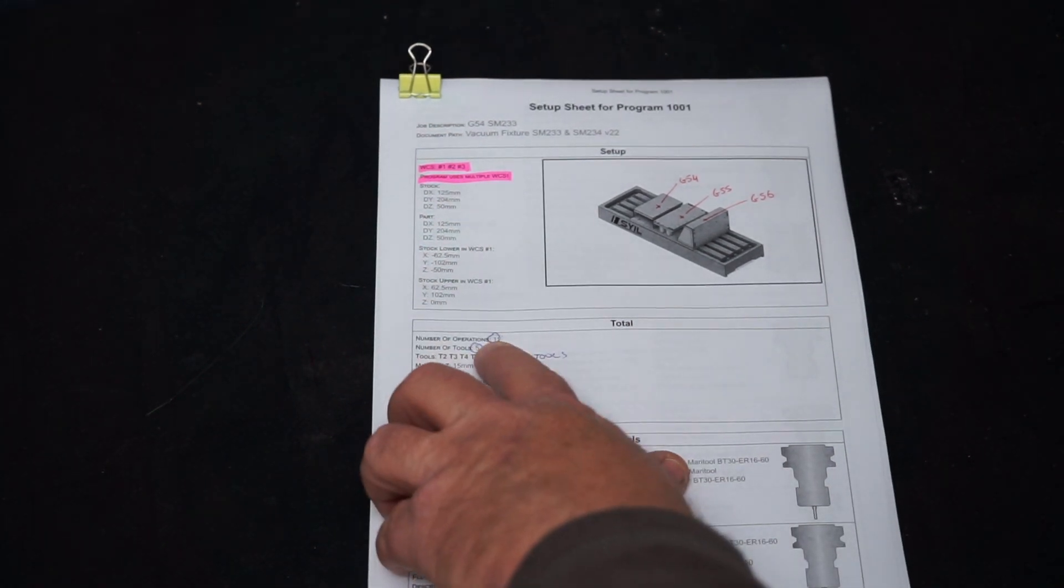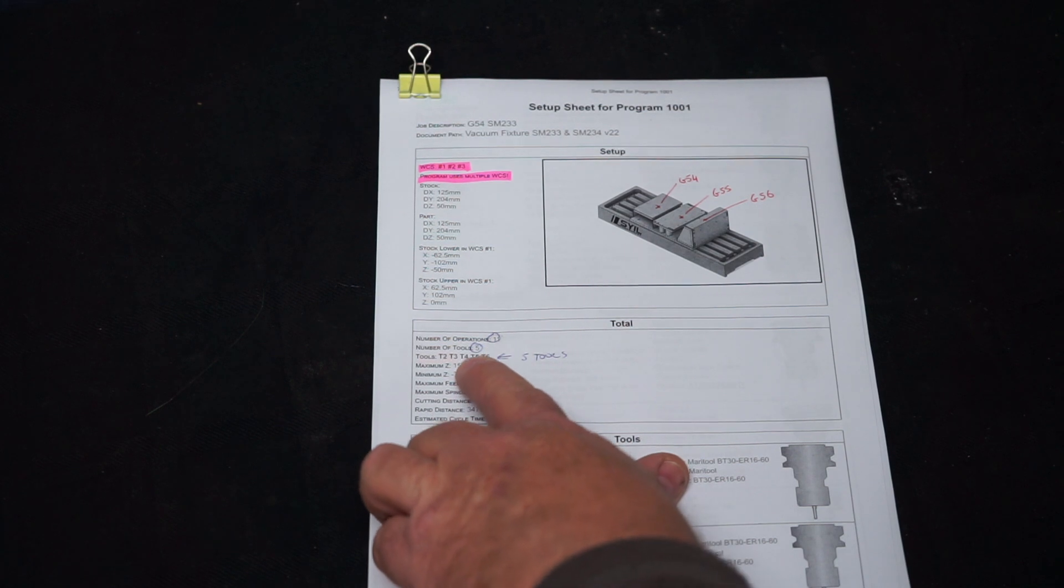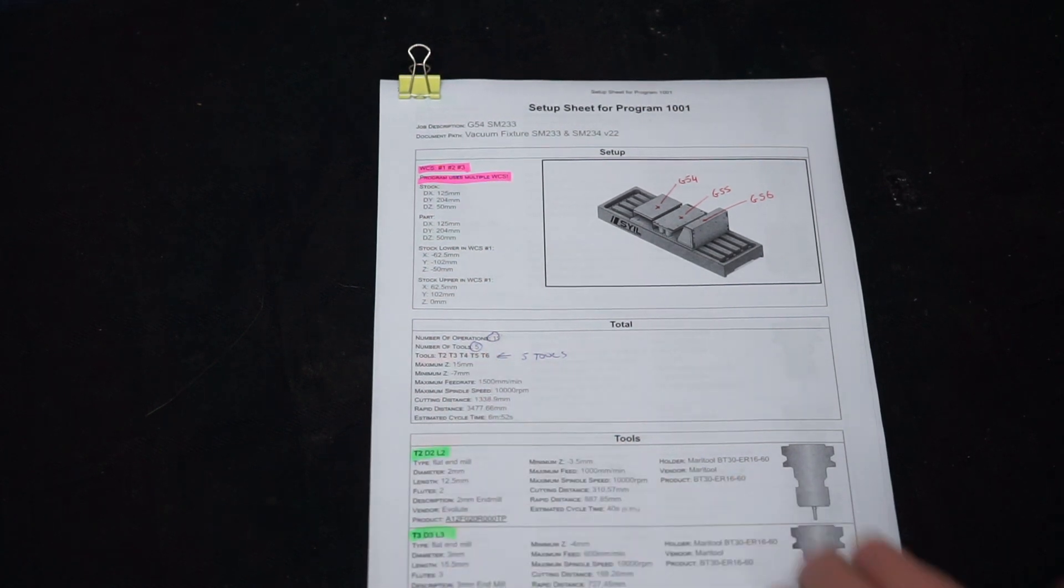Here, the setup sheet will say, look, there's 11 operations, there's a total number of five tools, and you can see the tools here, tool two, three, four, five, and six, so five tools,